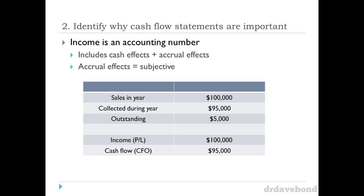What do you think is one of the largest non-cash expenses a company has? Depreciation. Exactly. Depreciation and amortization are, pretty much across the board for most companies, the largest non-cash expense item. Is that an objective number? No. What factors affect the depreciation expense in a particular year? Useful life is one — estimating how long that useful life will be. The residual value is another. And the method we choose is also a choice by management. So all of those things can change what our depreciation expense is going to be.